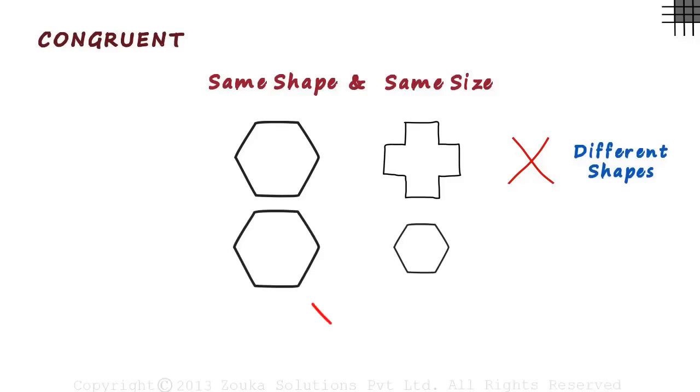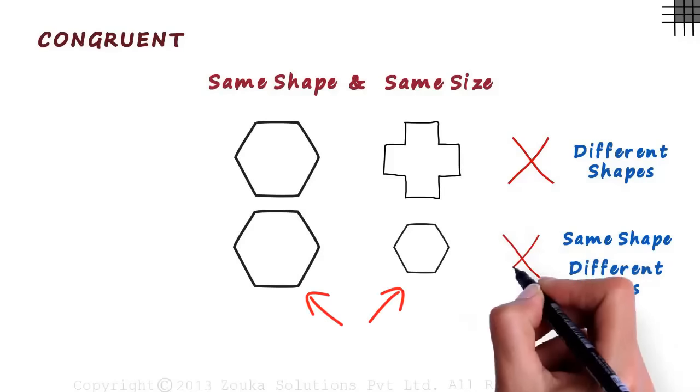Now look at this shape and this one. We can see that their shape is the same. But wait! Their sizes are different. Which is why these two figures are also not congruent.